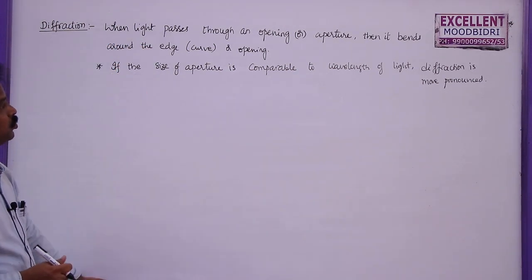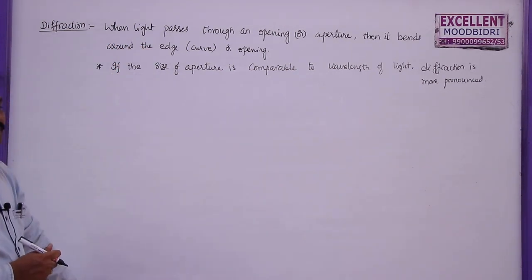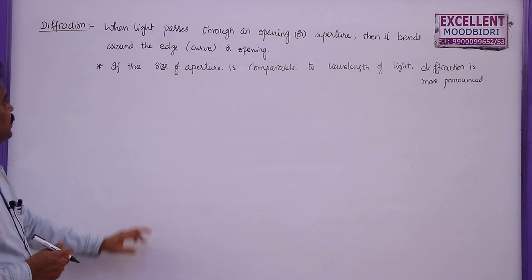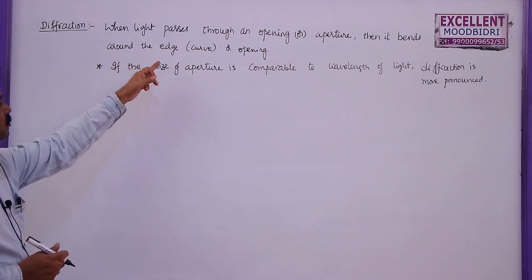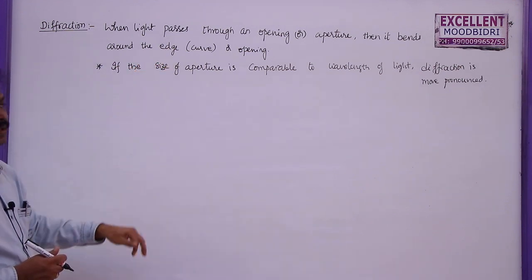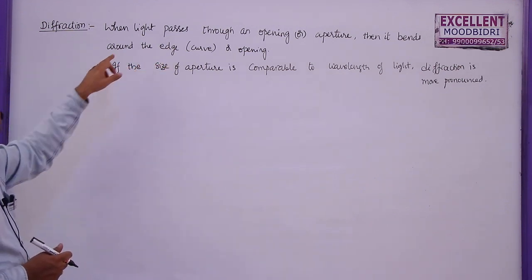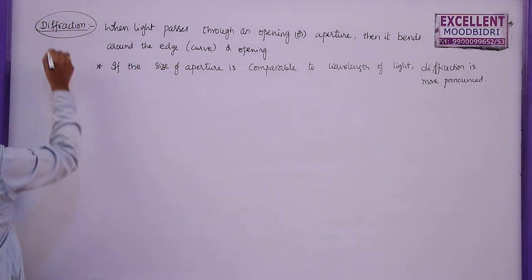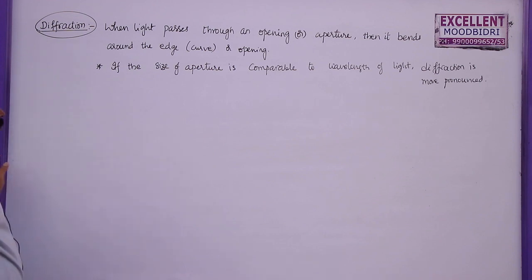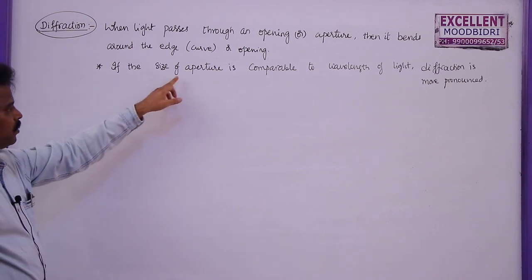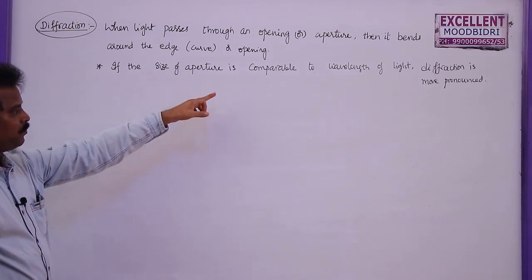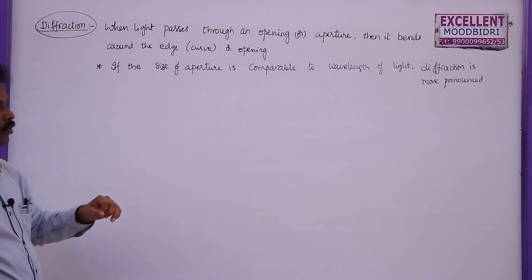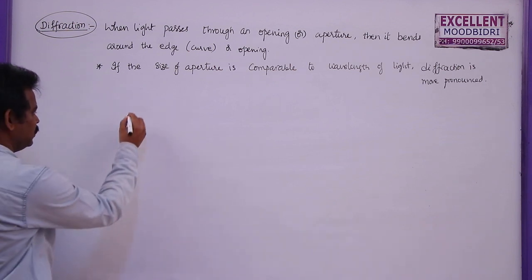When light passes through an opening or aperture, it bends around the edge of that opening. This is called diffraction. Now, if the size of the aperture is comparable to the wavelength of light, diffraction is more pronounced.